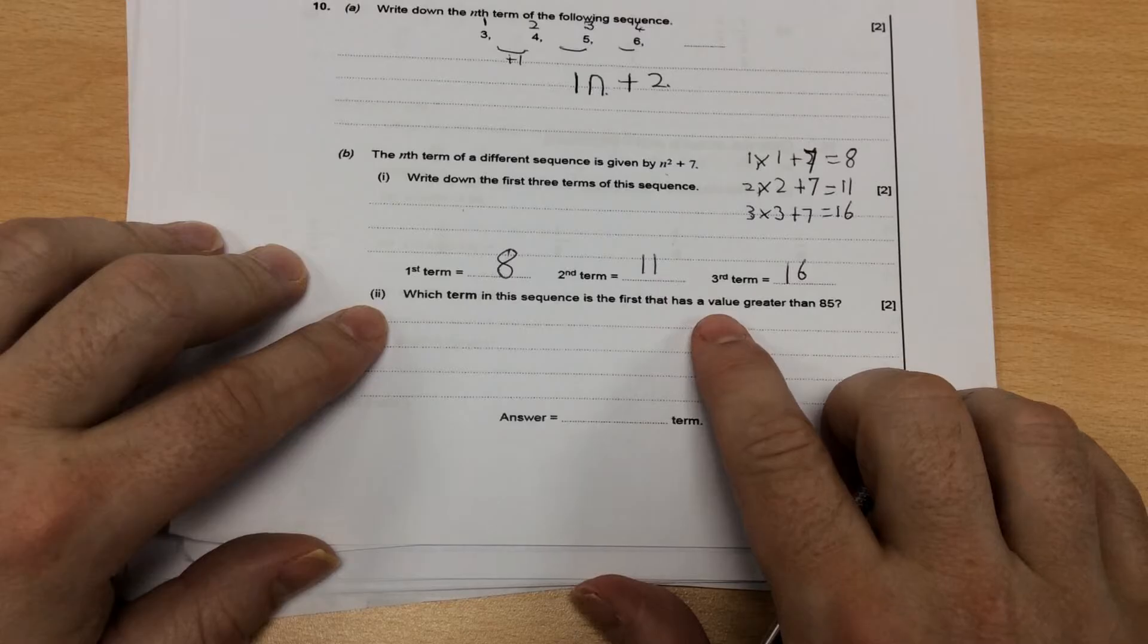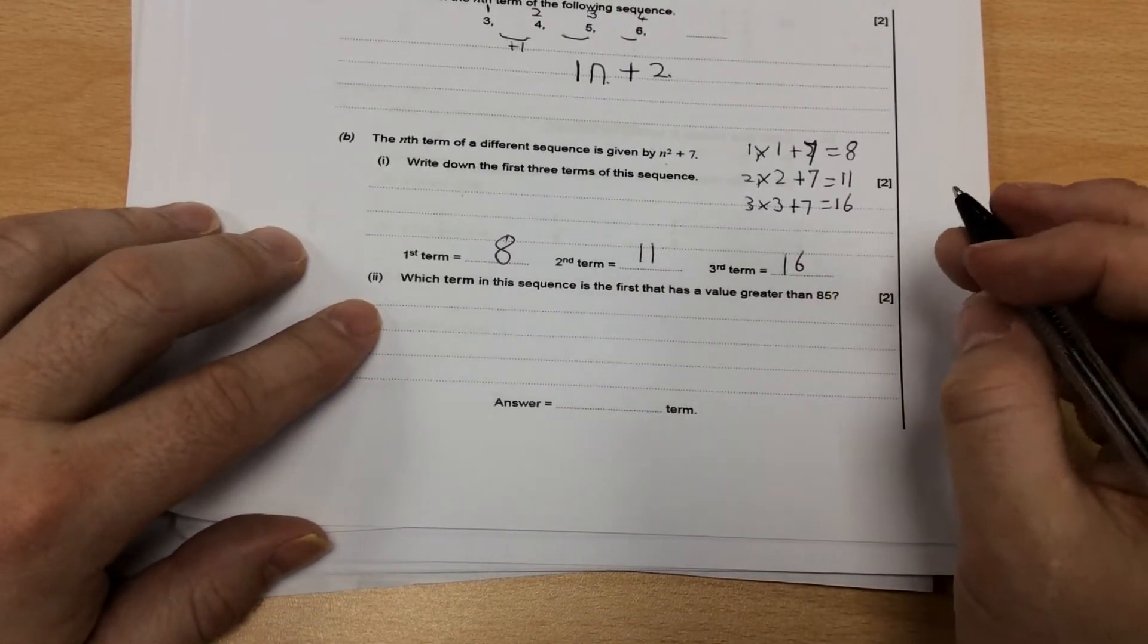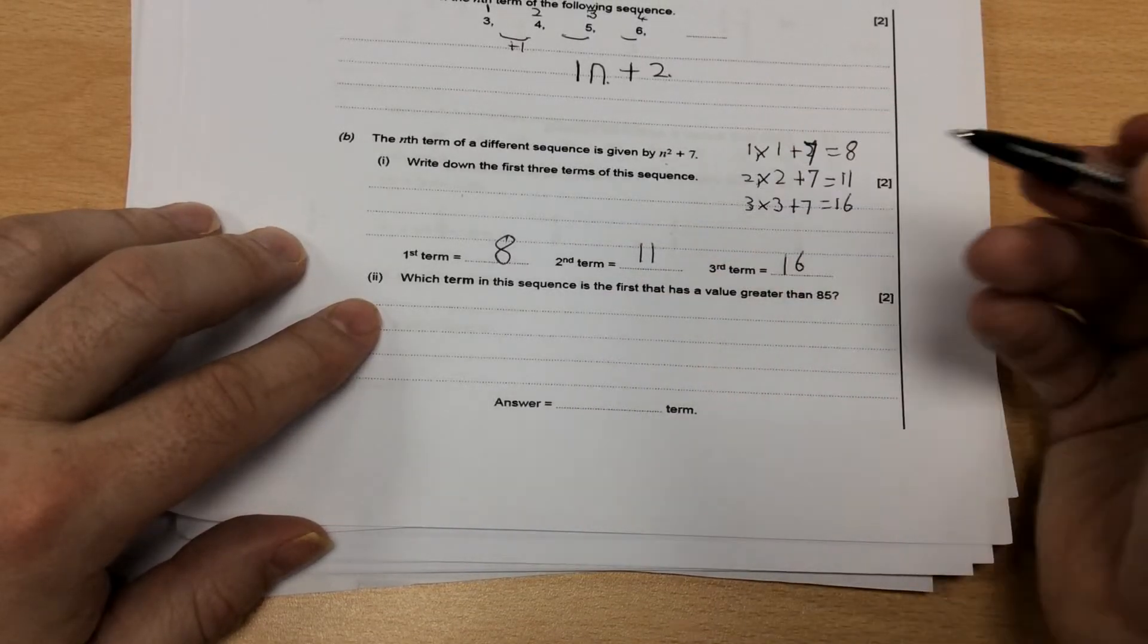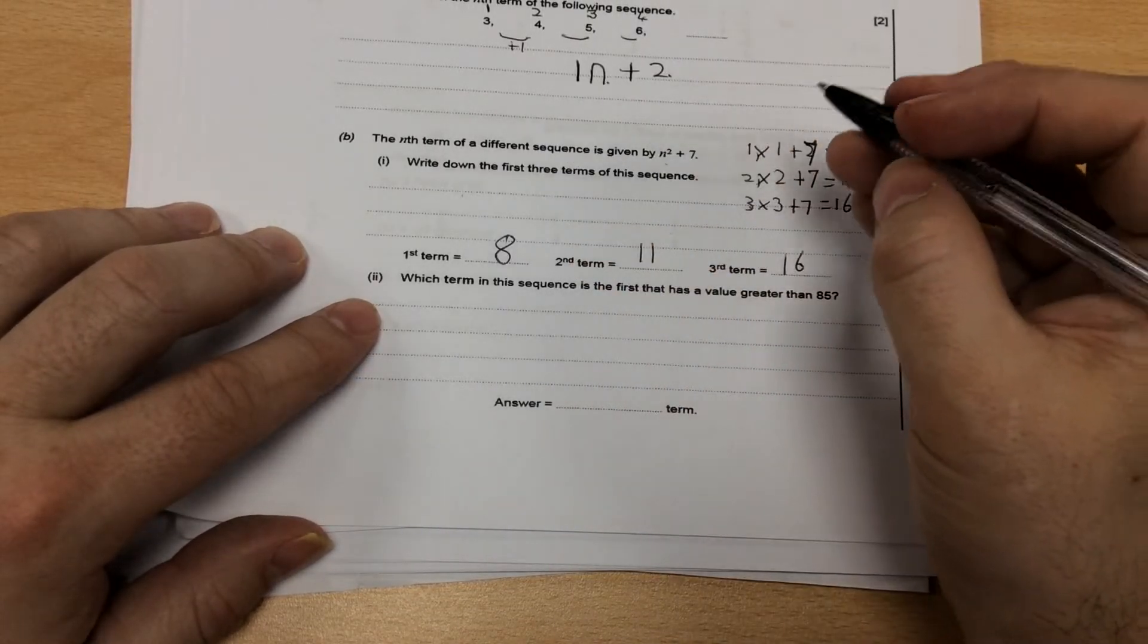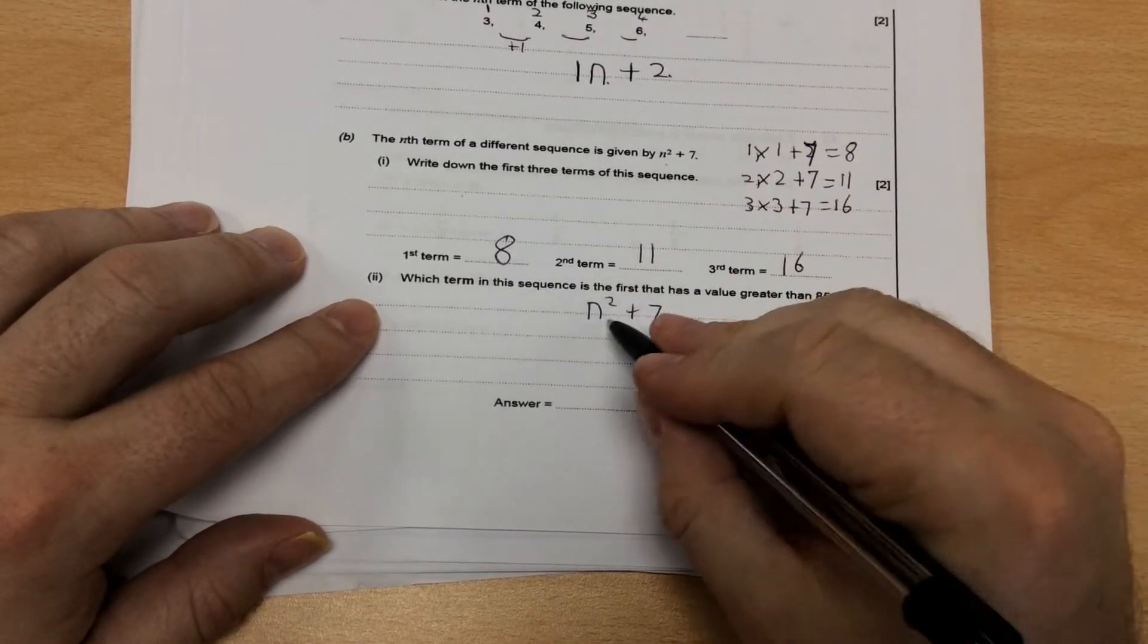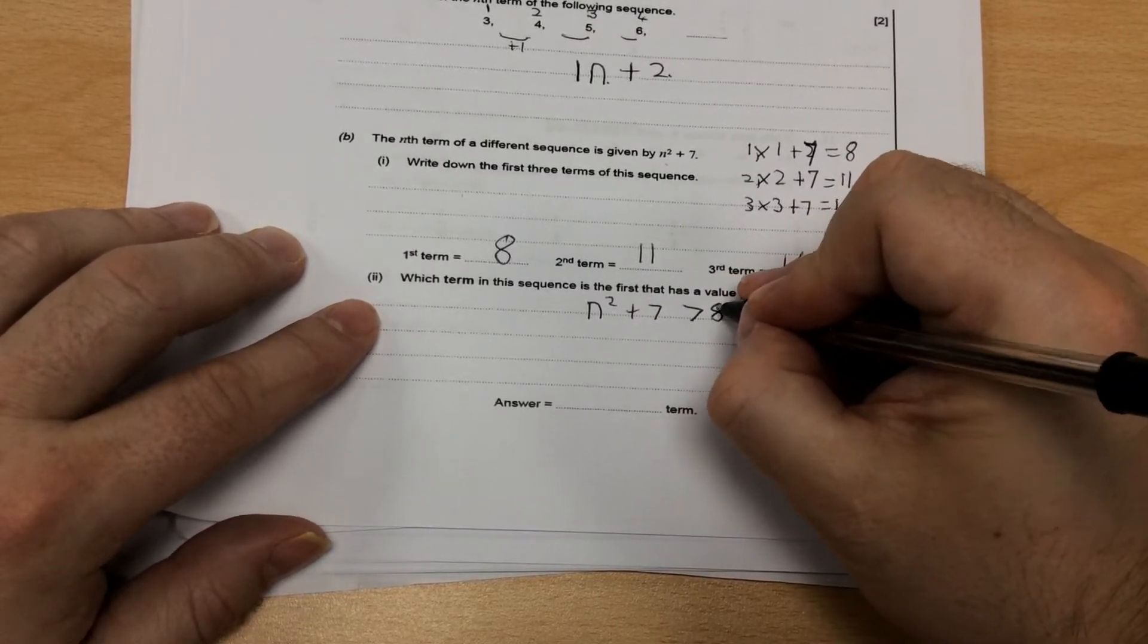Which term is the first in that sequence that has a value greater than 85? There's two ways of doing this. You can either do it by trial improvement, by guessing numbers, or you could do it by solving it by using an equation. There's n squared inequality, n squared plus seven, is bigger than 85.